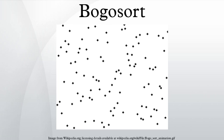BogoBogosort is an algorithm that was designed not to succeed before the heat death of the universe on any sizable list. It works by recursively calling itself with smaller and smaller copies at the beginning of the list to see if they are sorted. The best case is a single element, which is always sorted. For other cases, it compares the last element to the maximum element from the previous element in the list. If the last element is greater or equal, it checks if the order of the copy matches the previous version, copies back if not, and returns. Otherwise, it reshuffles the current copy of the list and goes back to its recursive check.